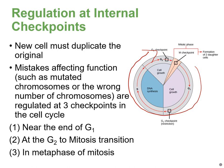There are three checkpoints we're going to talk about in this lecture. The first is near the end of gap one. The second is right before the G2/M transition — so the end of gap two before we start mitosis. And the third is in metaphase of mitosis, where we check for mutated chromosomes or the wrong number of chromosomes.